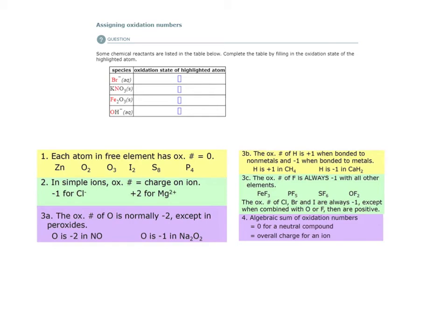Here's example two of the assigning oxidation numbers topic. For the first species, rule two would apply. In simple ions, the oxidation number is equal to the charge of the ion. So in this case, the charge of the ion is minus one, so the oxidation number would be minus one.